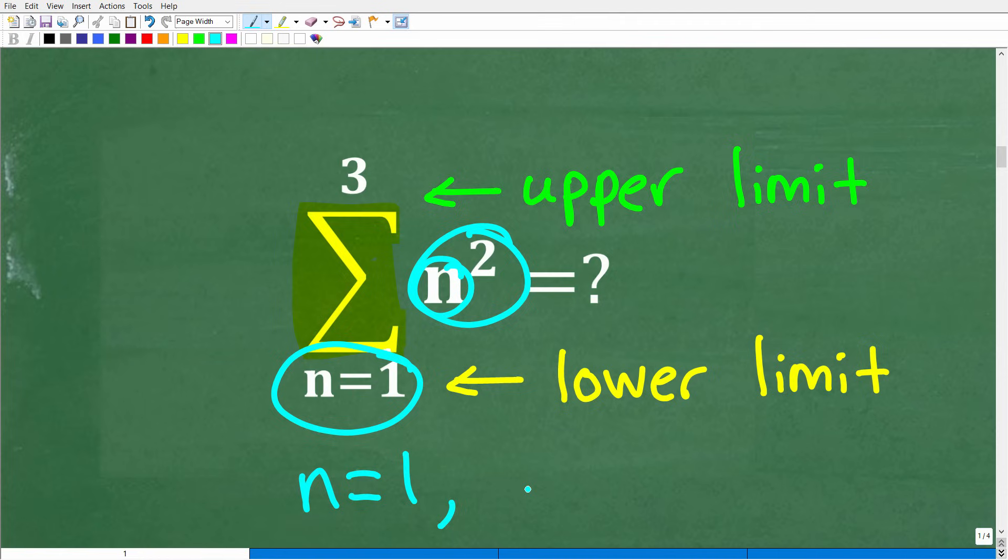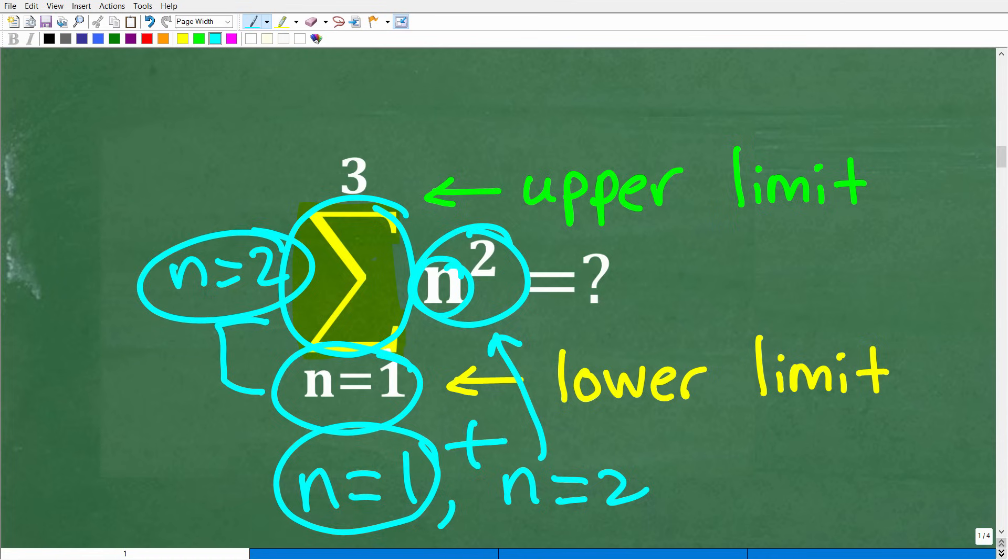Then we're going to index. So the way the summation notation works is that we index, we kind of go up a notch, and we go to n is equal to 2. So we're going to go to n is equal to 2, and we're going to do the same thing. But we're going to be adding.